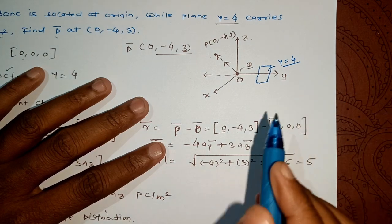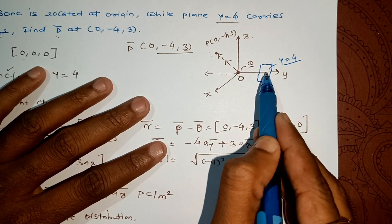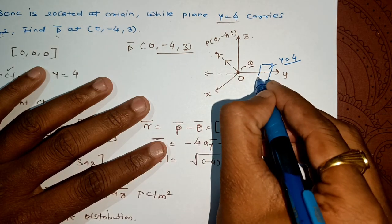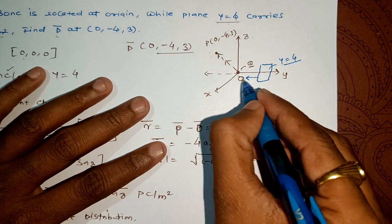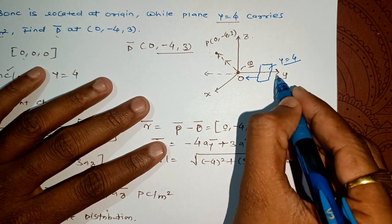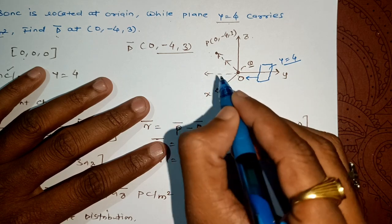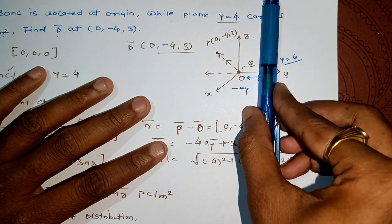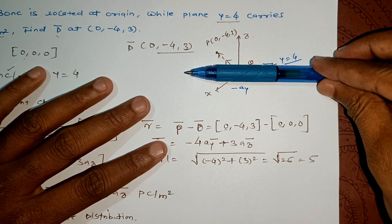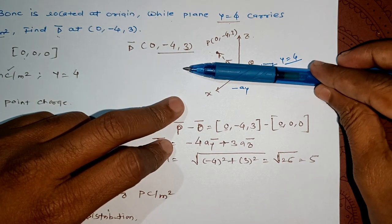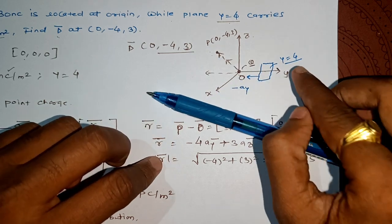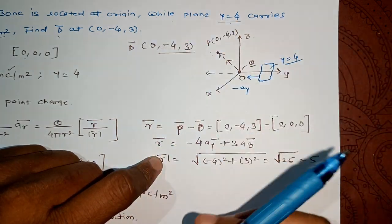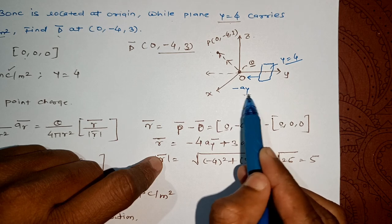The plane is at y = +4. Our point P is at y = -4, which is below the plane. The electric flux density from the plane points toward the observation point, which is in the negative y direction. So the normal vector an-bar = -ay. Therefore D2 = (rho_s / 2) · (-ay), giving us the surface charge contribution in the negative ay direction.